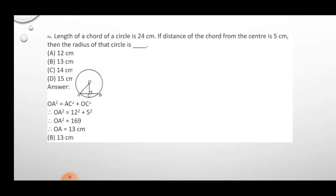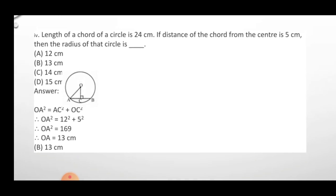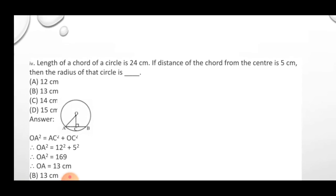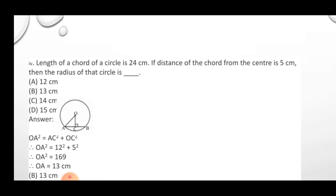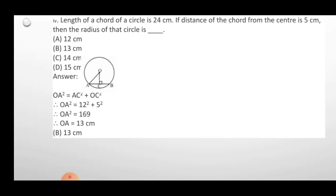Question 4: The length of a chord is 24 cm and the distance of the chord from the center is 5 cm — find the radius. Using Pythagoras: OA² = AC² + OC² = 12² + 5² = 144 + 25 = 169, so OA = 13 cm.